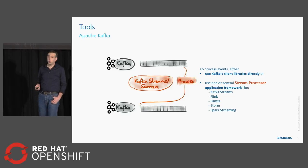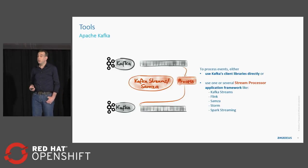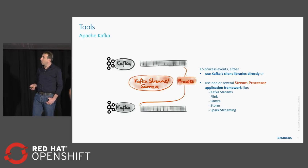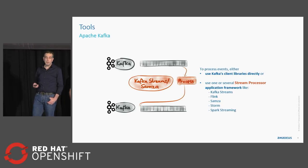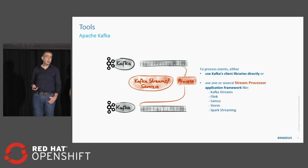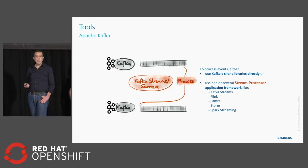In terms of tooling, Apache Kafka is the leading open source tool to implement this kind of event log. It is built for performance and is very simple. In terms of scalability, the latency is very low. Companies like Netflix or Uber are handling more than 12 million events per second through a set of Kafka clusters. So in terms of real-time processing, it delivers.